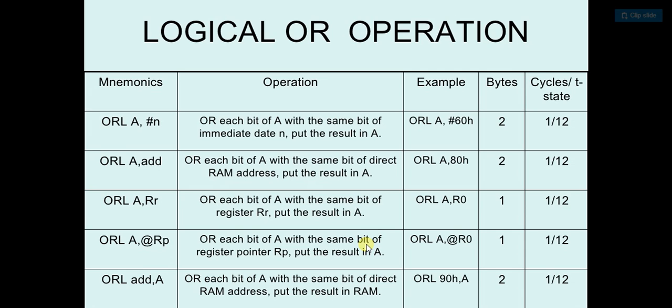What it will do is it will do the OR operation of each bit of A with the same bit of immediate data N which is provided by us. See the example: ORL A hash 60H.